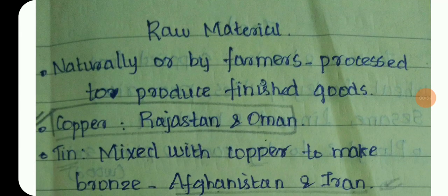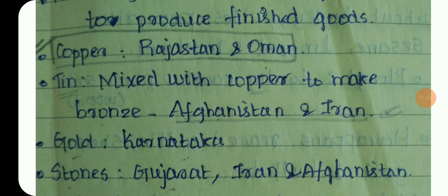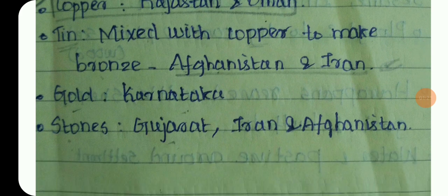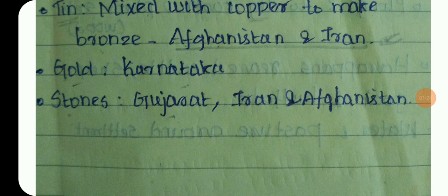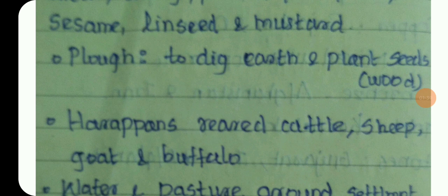Crops were produced by farmers. The main crops found include wheat, barley, pulses, rice, and sesame. Ploughing was practiced in the area. Tin was sourced from Afghanistan and Iran, and gold from Gujarat, Iran, and Afghanistan.